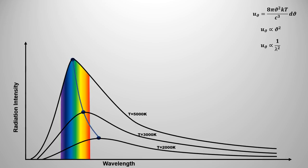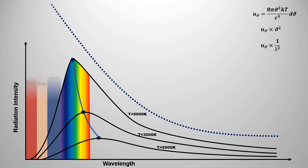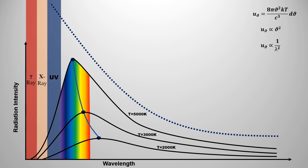What is the problem with this law? Since energy density is proportional to the square of the frequency, it is inversely proportional to the square of the wavelength. If we draw the graph according to this, it follows the blackbody radiation curve at high wavelengths. But due to the inverse square relationship at lower wavelengths, it predicts a huge amount of radiation which does not coincide with the actual curve. This prediction is known as the ultraviolet catastrophe. Max Planck used this mathematics, made a few changes, and successfully explained the curve.